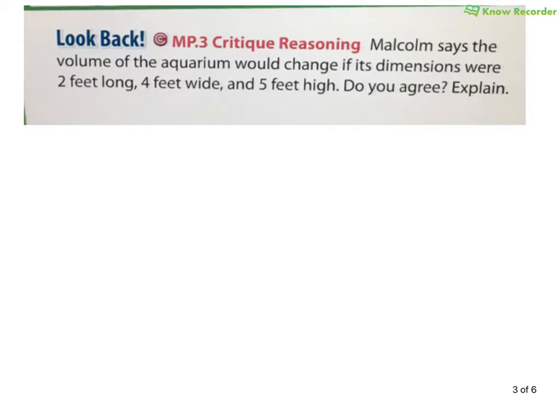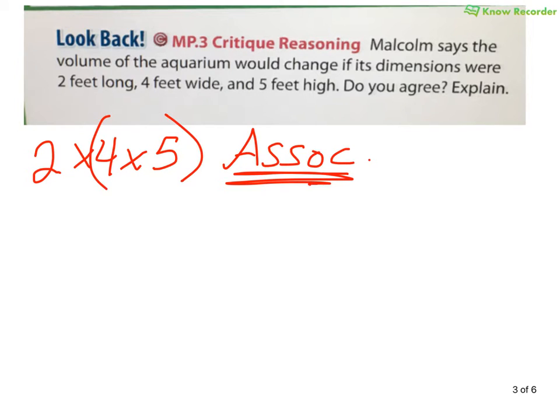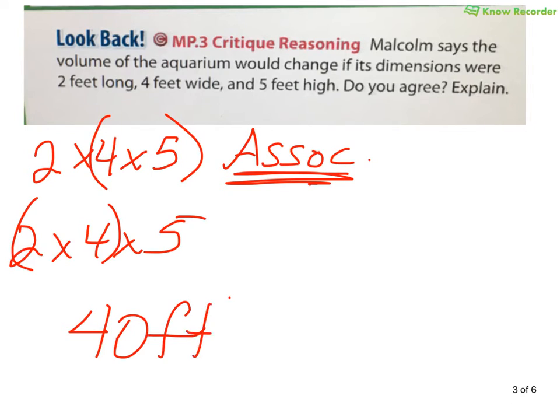Malcolm - poor Malcolm. In every example in this book, poor Malcolm is always wrong. Malcolm says that the volume of the aquarium would change if the dimensions were two feet long by four feet wide by five feet high. Do we agree? We said no, we don't agree. We talked about the associative property of multiplication where the order doesn't matter. I can multiply these first, I could multiply these first. It doesn't matter because no matter what, I'm still going to end up with those 40 cubic feet. So sorry Malcolm, just because you change the numbers around doesn't mean that it's going to change the answer.